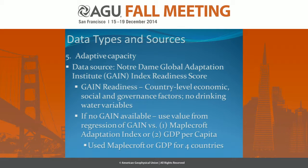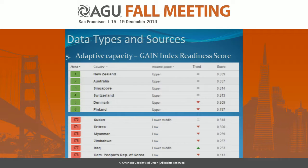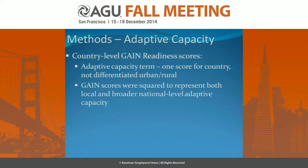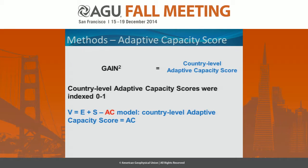For adaptive capacity, we used the Notre Dame GAIN Index readiness score. We used readiness specifically because it doesn't include water or drinking water variables — we don't want to double-count. It's just a raw adaptive capacity with economic, social, and governance factors. GAIN was available for nearly every country; there were four countries out of 173 that didn't have it. At the top you see New Zealand, Australia, Singapore, Switzerland, Denmark, Finland; at the bottom, Sudan, Eritrea, Myanmar, Zimbabwe, Iraq, and North Korea. The country-level GAIN readiness score was squared to represent both local and national adaptive capacity — we take the GAIN score, indexed 0 to 1, square it, and that gives us our AC term.